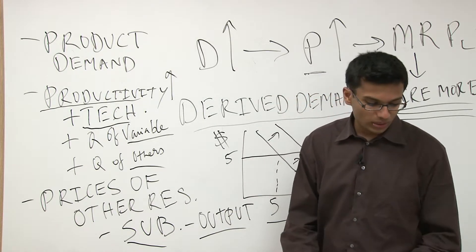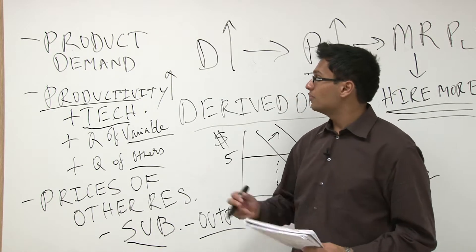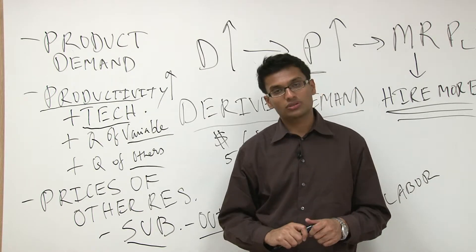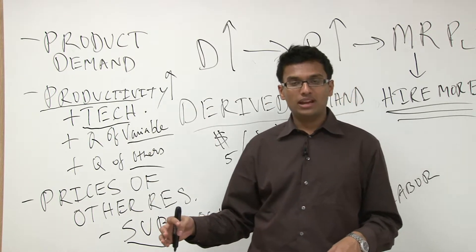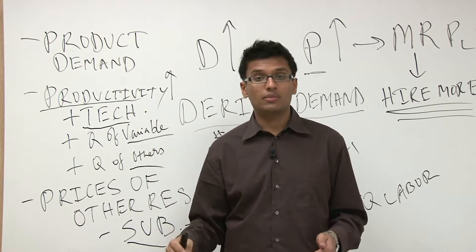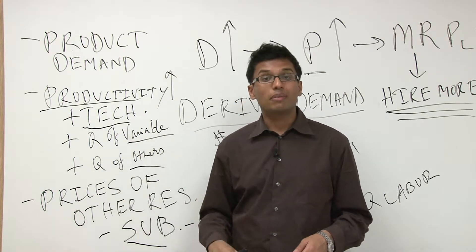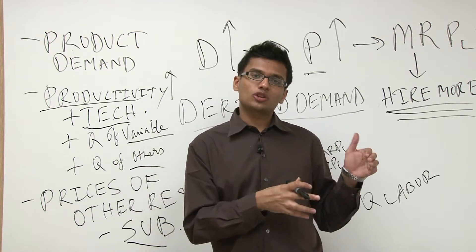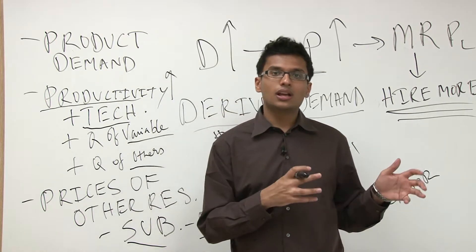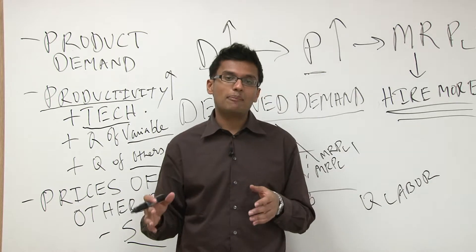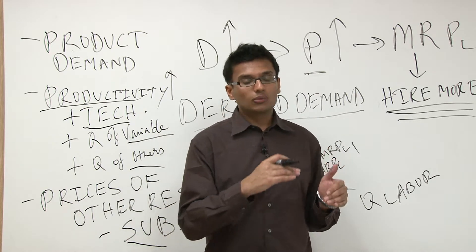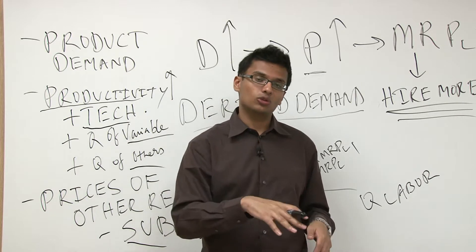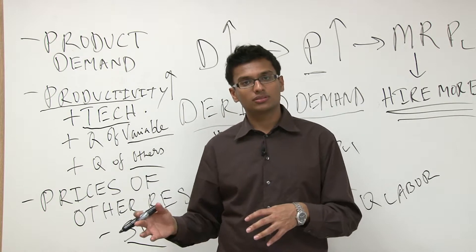The last factor is complementary resources. Say you're making peanut M&Ms and the cost of peanuts drops drastically — with that extra money saved, you could use it on labor. So the price of complementary resources often dictates whether you can hire more or subtract labor.